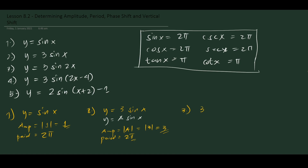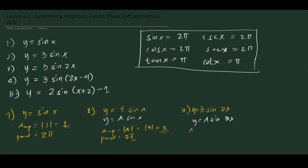For number 3, y = 3 sin 2x. Now we have a modified period. This is of the form y = A sin Bx. The amplitude is still the absolute value of 3, which is 3. For the period, the formula is the normal period of the function — which for sine is 2π — divided by the absolute value of B. Since B = 2, we get 2π divided by 2, which equals π.